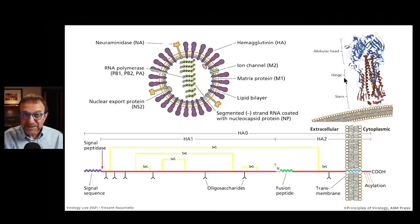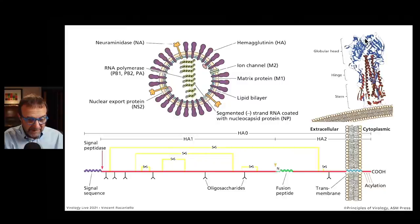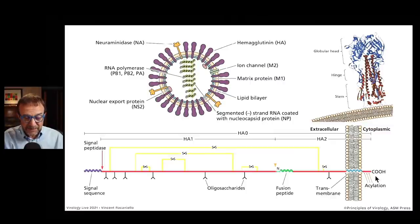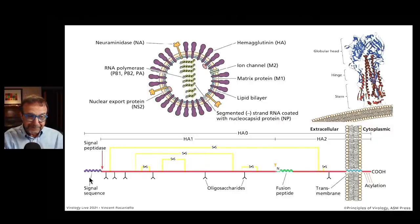It seems like a contradiction — the hemagglutinin structure is a type 1 fusion protein in the membrane, perpendicular to the membrane, with a fibrous stem and globular head that binds sialic acid. At the bottom is a line diagram of the HA protein showing a transmembrane sequence anchoring the protein, a short cytosolic sequence, and the bulk of the HA outside. At the N-terminus there's a signal sequence, which gets this protein into the endoplasmic reticulum. The signal sequence is actually removed once the protein's in the ER.